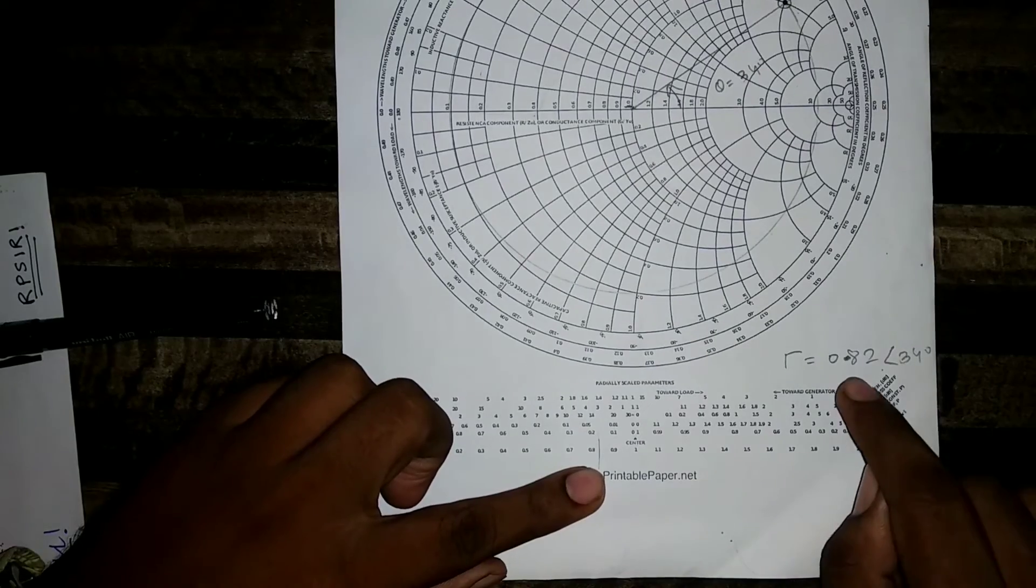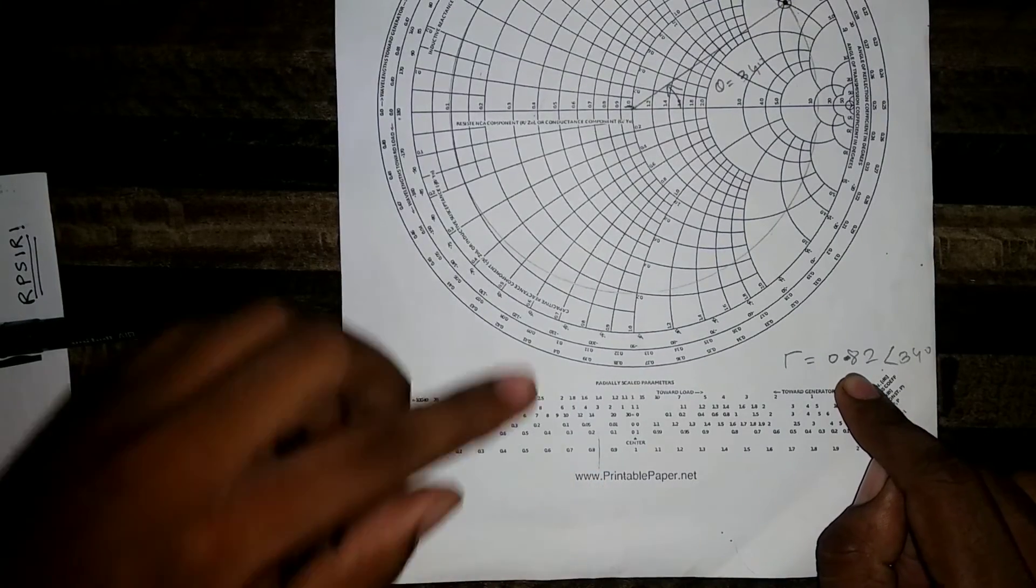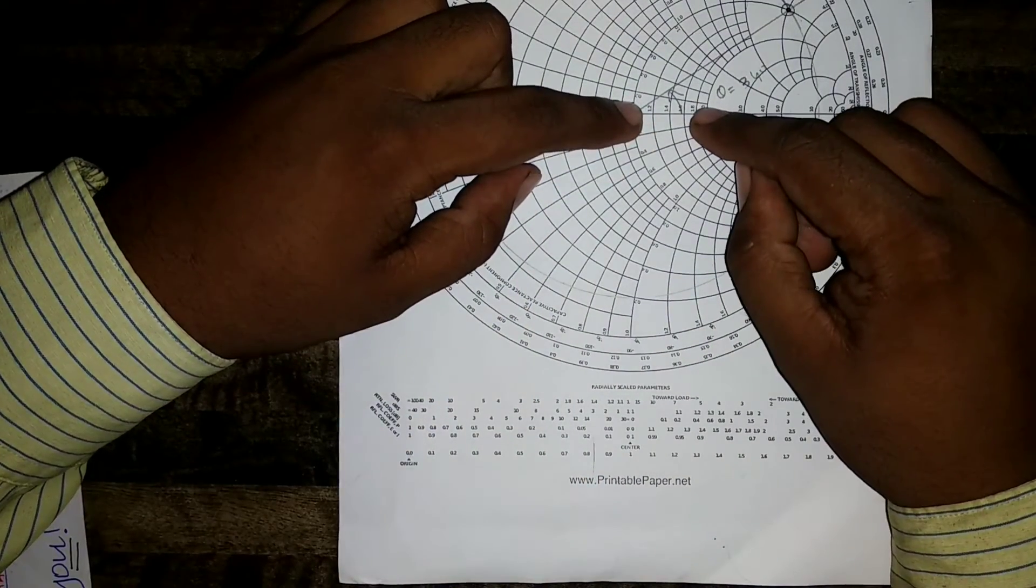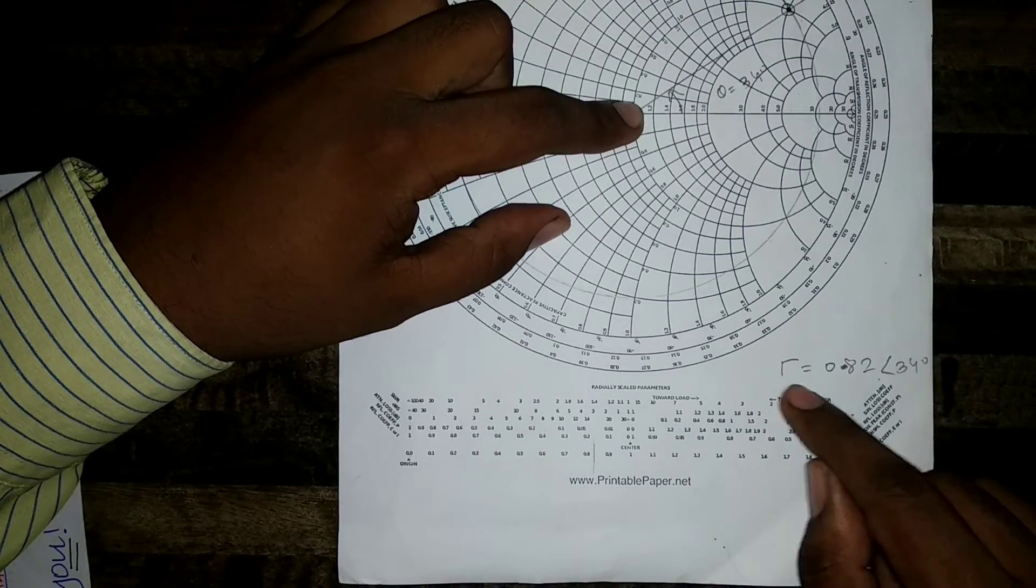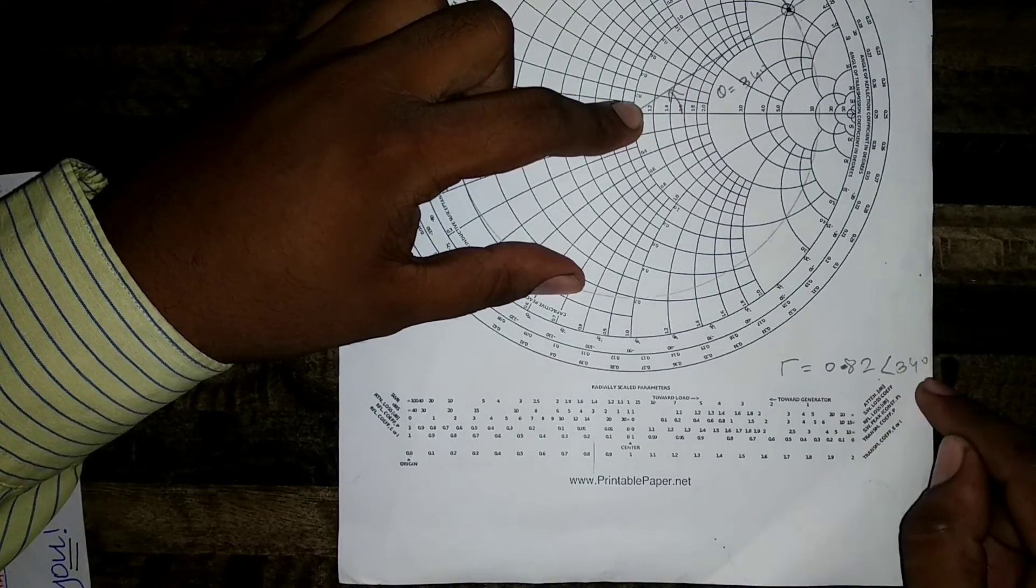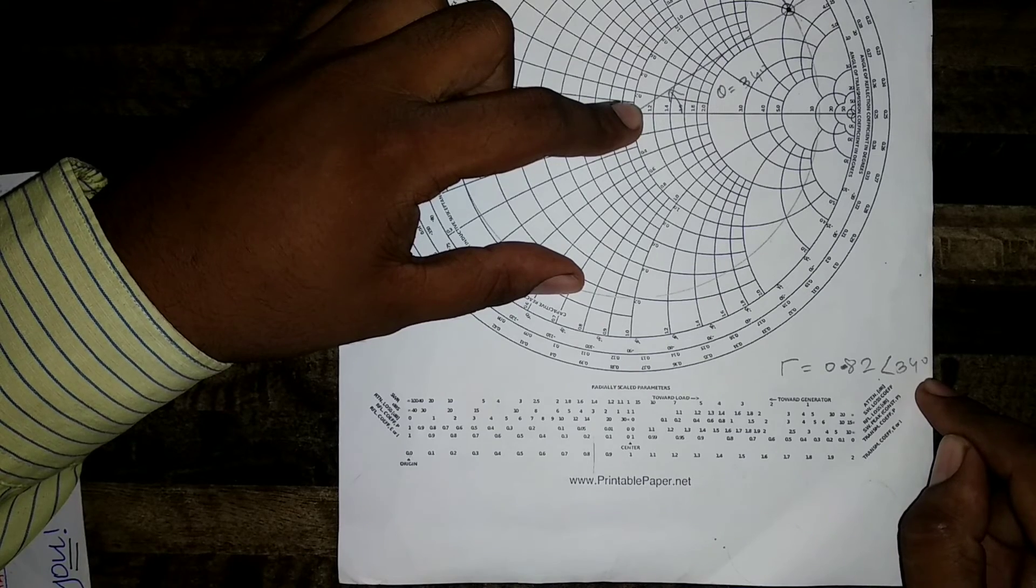It will give the magnitude. It comes out to be 0.82 and you can measure the angle from center line to the ZL line. This angle gives the complete reflection coefficient. 0.82 angle 34 is my reflection coefficient.